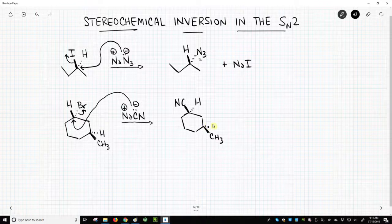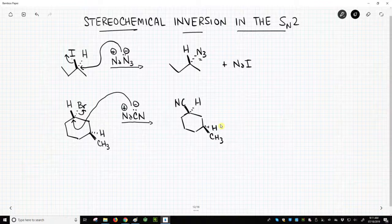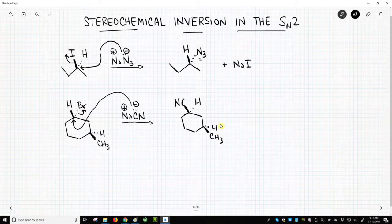This is a really common, I won't call it a trick question, but a question that's testing you is to see if you recognize the fact that the SN2 inverts the stereocenter where the chemistry occurs but leaves the other stereocenters alone.